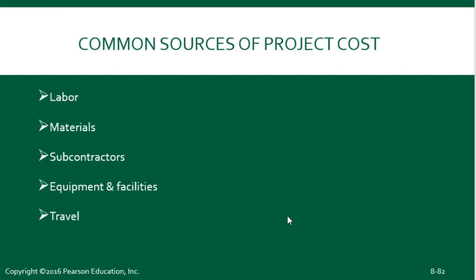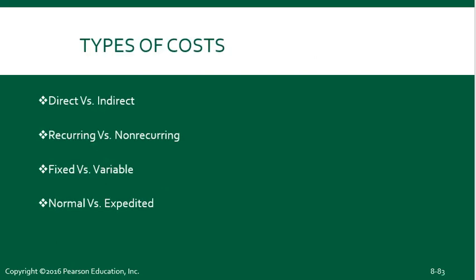Let's discuss project cost and sources of cost. Common sources are labor, materials, subcontractors, equipment and facilities, and travel. Other factors might include payments to engineering firms — for example, if you're doing electronic or mechanical work and need to create a mold or a chip set, you may pay a non-recurring engineering fee, or NRE, for an engineering firm to develop a component for your project. We also have categories of cost: direct versus indirect, recurring and non-recurring, fixed and variable, normal and expedited. It can be quite confusing sometimes to categorize each element of cost.